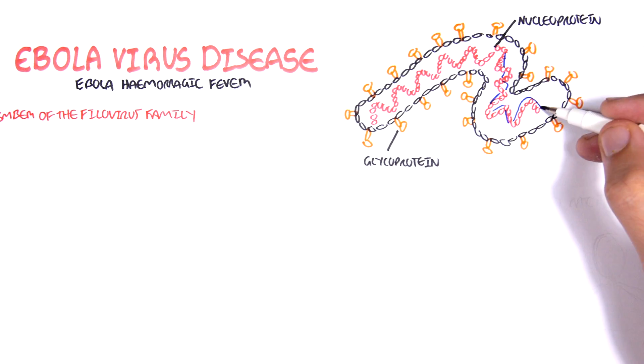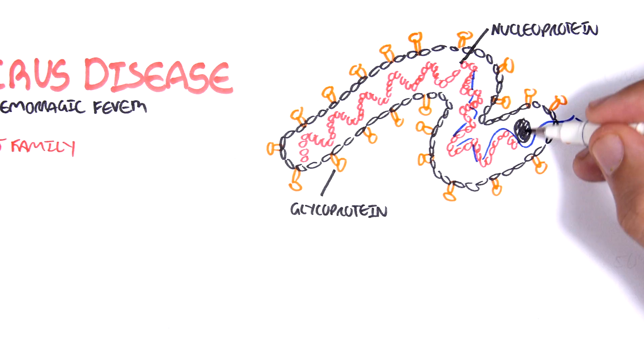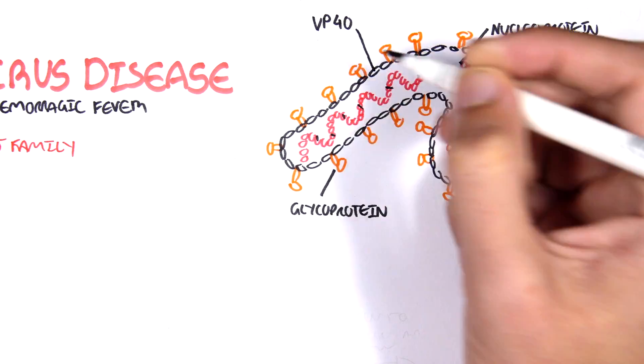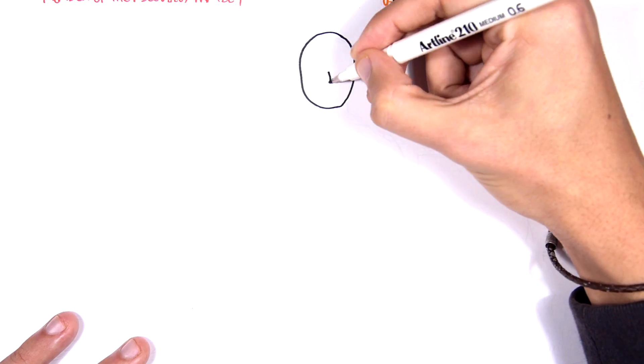Ebola also has an enzyme called polymerase which helps in its replication. Other important structures include VP40 and VP30, which help in viral replication.